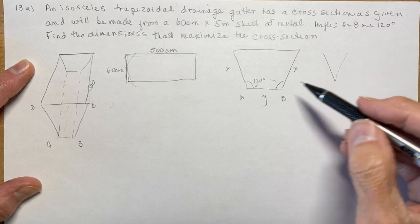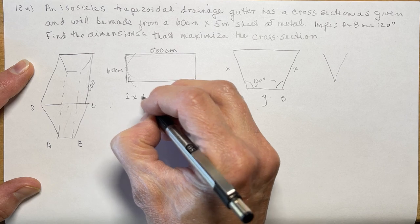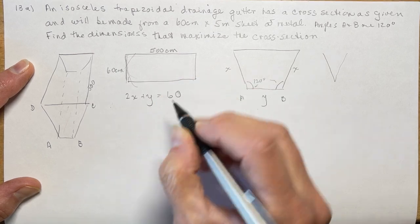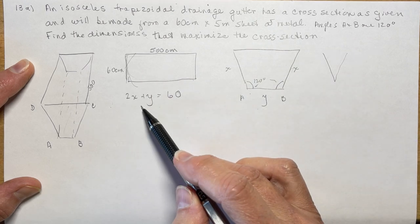So we have 2x's plus y, so 2x plus y has to equal 60 centimeters.